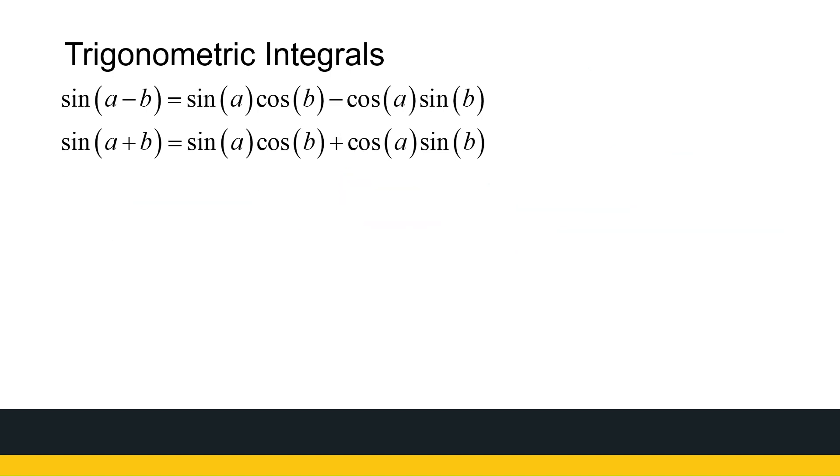Similarly, if I'm given sin(a - b) and sin(a + b), these two identities, if I add them together, sin(a - b) plus sin(a + b) equals two times sin(a)cos(b). And I'm going to use this identity to simplify integrals of that format.